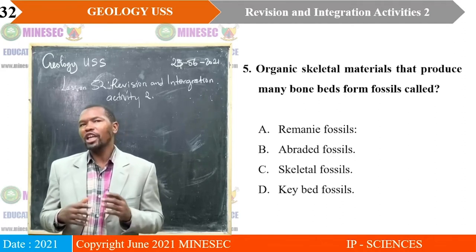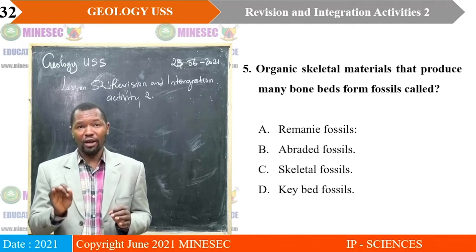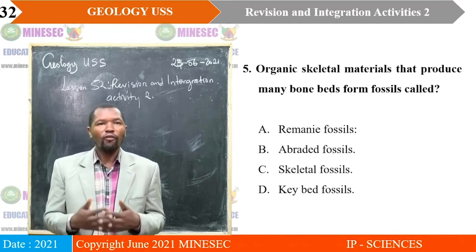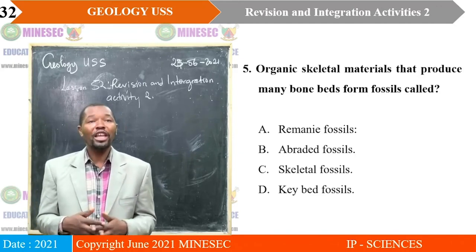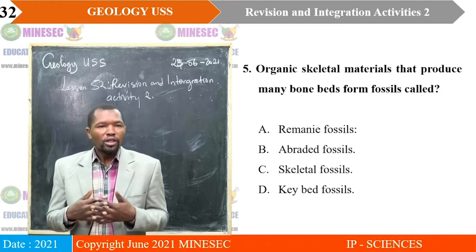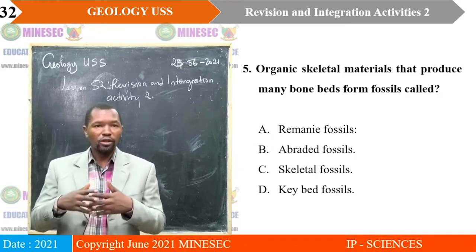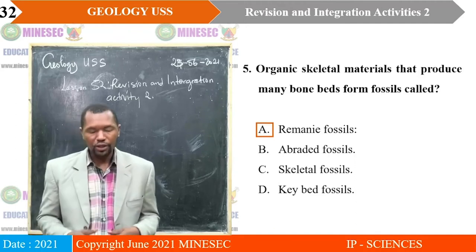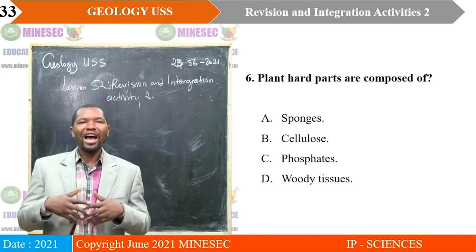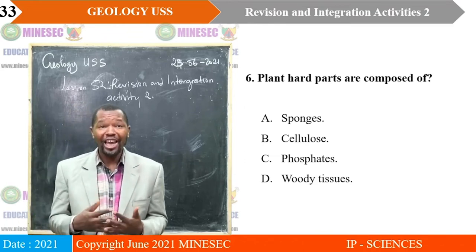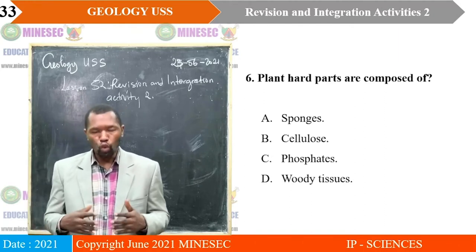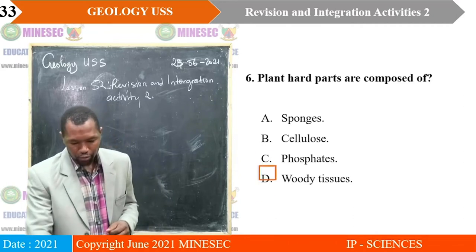Question five: organic skeletal materials that produce many bone beds form fossils called — A. Ramine fossils, B. Abraded fossils, C. Skeletal fossils, D. Key bed fossils. Correct answer is A, ramine fossils. Question six: plant hard parts are composed of — A. Sponges, B. Cellulose, C. Phosphate, D. Woody tissues. Correct answer is B, cellulose.